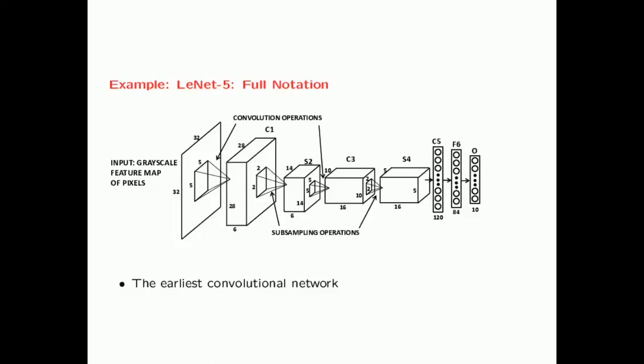The second layer in LeNet-5 is a subsampling operation — similar to max pooling but using average pooling: taking the average of elements in a 2 cross 2 grid, then scaling with a trainable weight and adding a bias. The final C5 layer was a convolution where the filter size matched the input, making it effectively a fully connected layer.